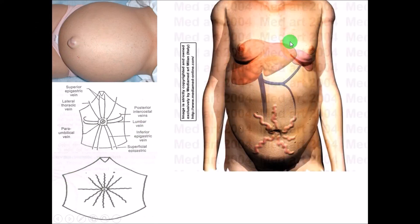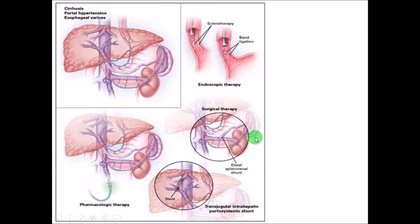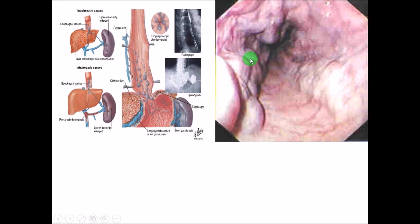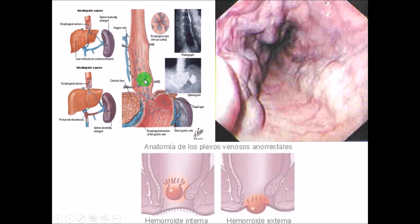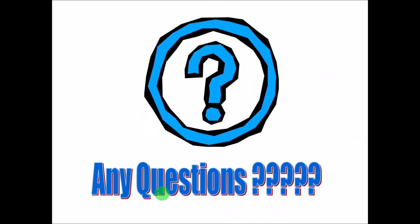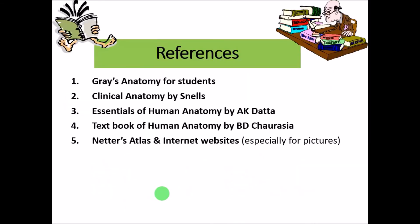Pictures are shown demonstrating ascites, caput medusae, esophageal varices, and internal hemorrhoids. These are all the applied anatomical aspects of the portal vein and portal hypertension.